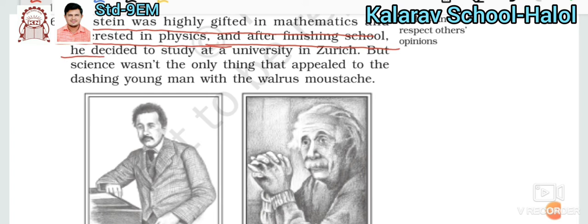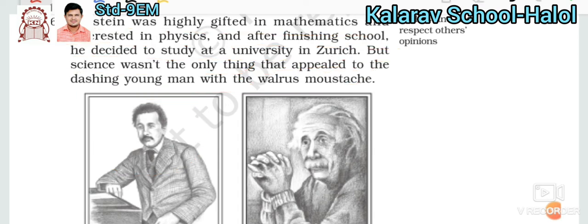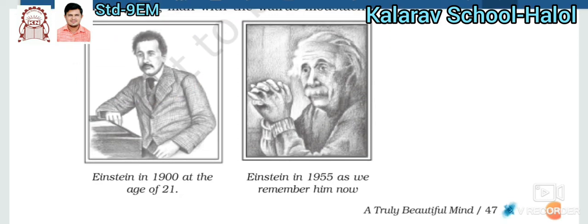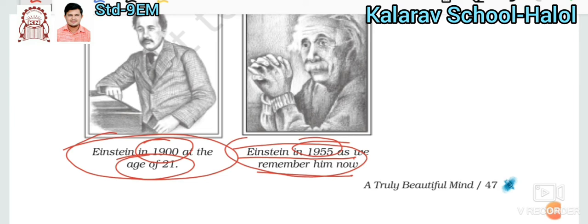But science wasn't the only thing that appealed to the dashing young man with a walrus mustache — meaning long mustaches like a walrus. Here you can see the younger Einstein, who looked quite handsome with a hero-type personality. So his interests were not limited to science alone. This picture is of Albert Einstein in the year 1900, when he was 21, and another picture from 1955 — which is how we remember him now.